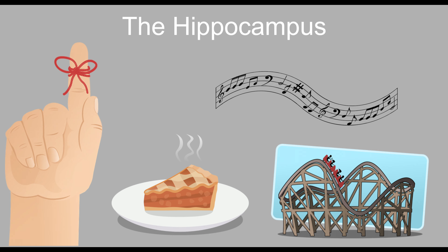The hippocampus is in charge of our memories. This part of our brain also stores our long-term memories attached to a feeling. Our bodies have an automatic reaction when we experience a familiar smell, taste, feel, or sound. Think of a nursery rhyme from your childhood, or maybe the smell of chocolate chip cookies baking — something connected to an important event or action.